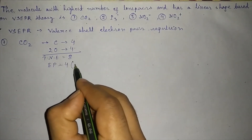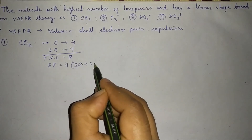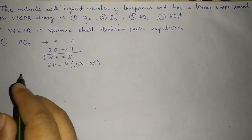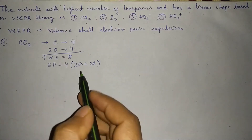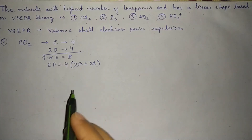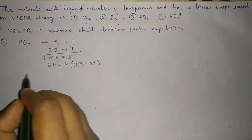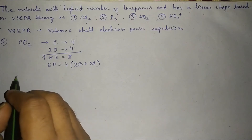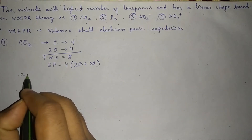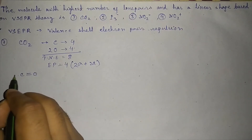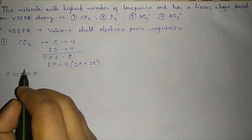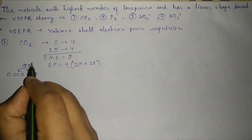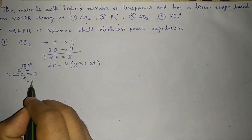Each oxygen is bonded with one sigma plus one pi bond, so for two oxygens we have two sigma and two pi bonds. Pi bonds don't contribute to geometry, so the two sigma bonds arrange to minimize repulsion. The structure is O=C=O with a bond angle of 180°, and carbon is sp hybridized.